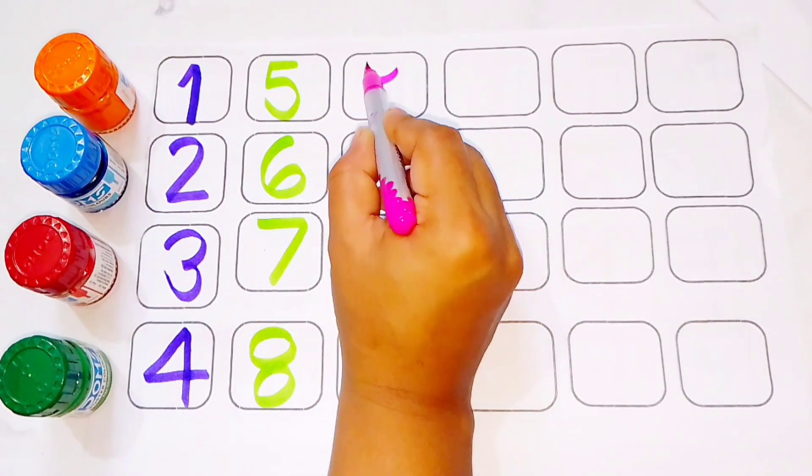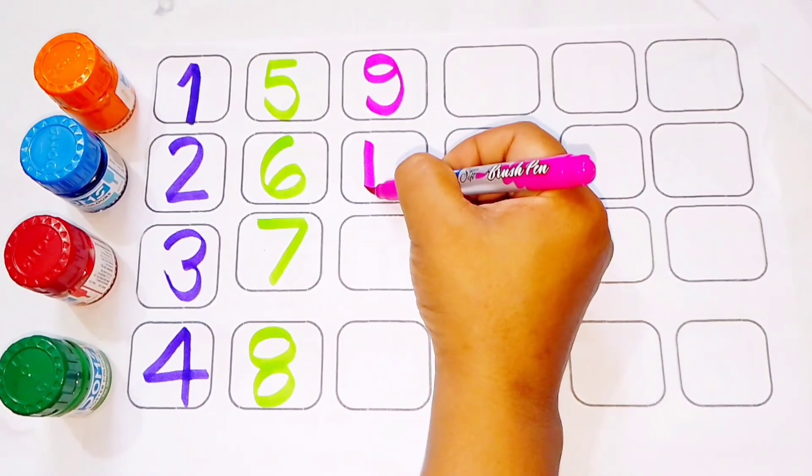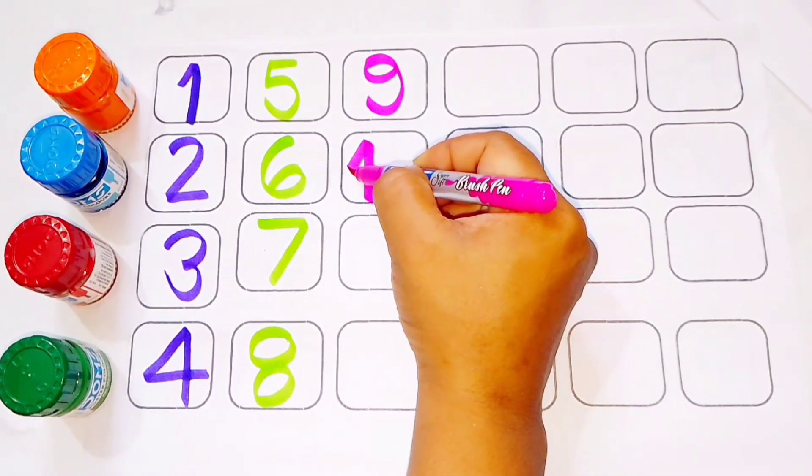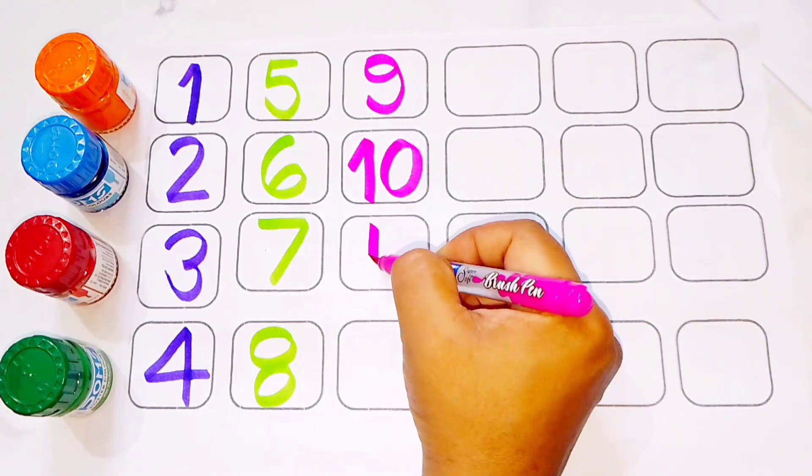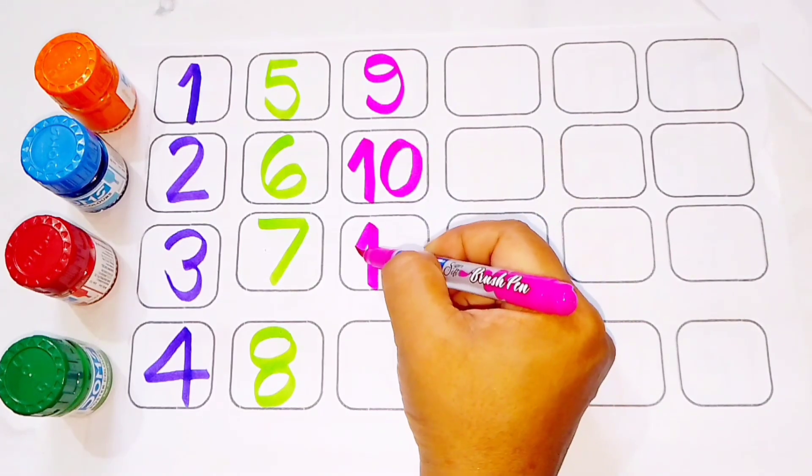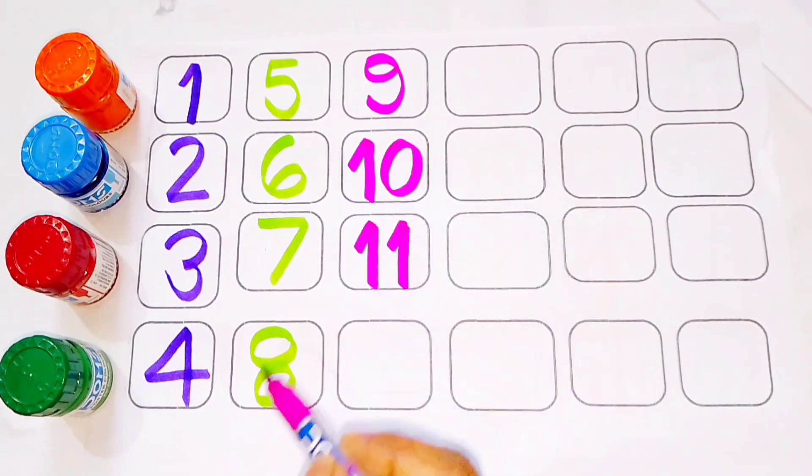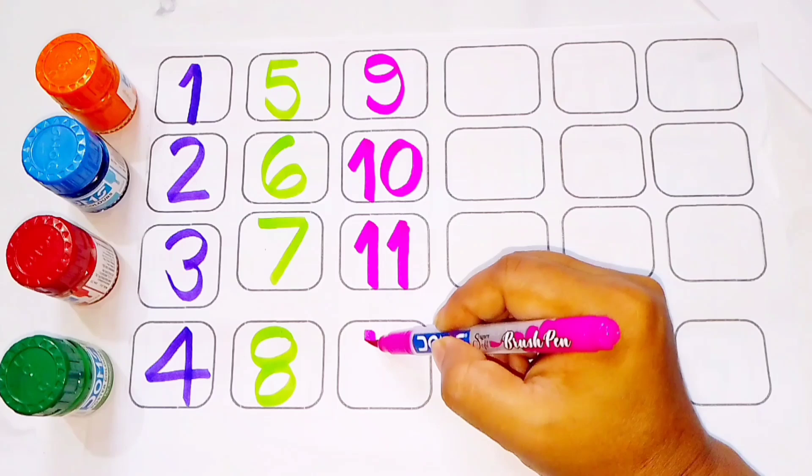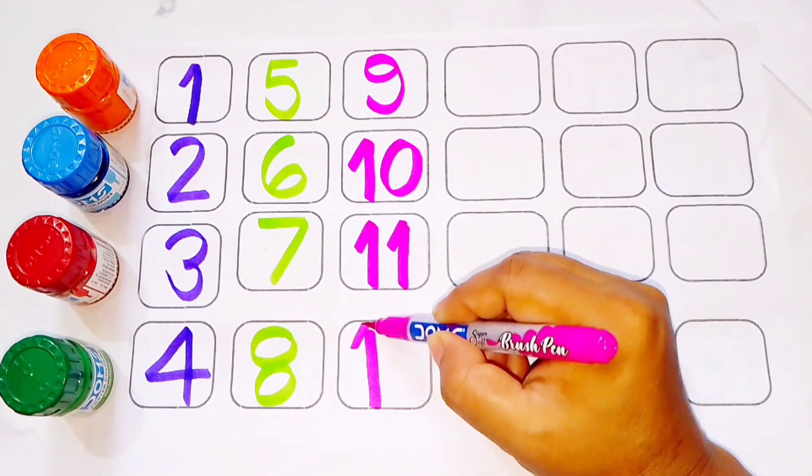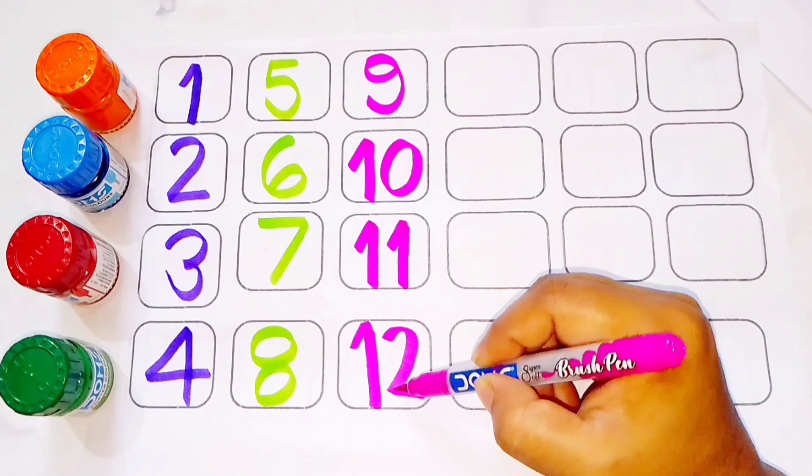Pink color 9. N, I, N, E, 9. 1, 0, 10. T, E, N, 10. 1, 0, 10. 11. E, L, E, V, E, N, 11. 12. 1, 2, 12. T, W, E, L, V, E, 12. 1, 2, 12.